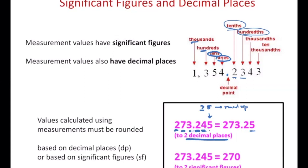So if the digit after is five, six, seven, eight, or nine, the previous digit would be rounded up. Now in the same number, 273.245, if we want to round to two significant figures, that's a little bit of a different story.